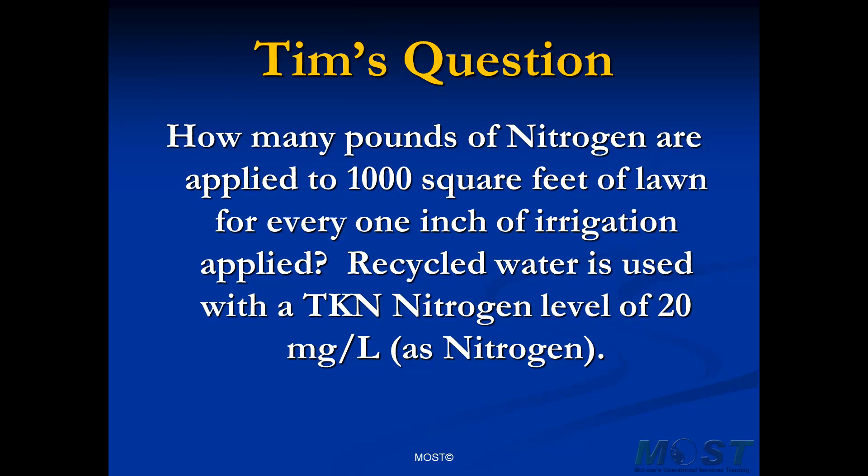We have an example of how we would solve that problem. We're using 1,000 square feet of lawn receiving one inch of irrigation water. That's a very small amount, but you just amplify that for the actual area you're considering. The recycled water has a TKN, which is total Kjeldahl nitrogen level, of 20 parts per million milligrams per liter, expressed as nitrogen.